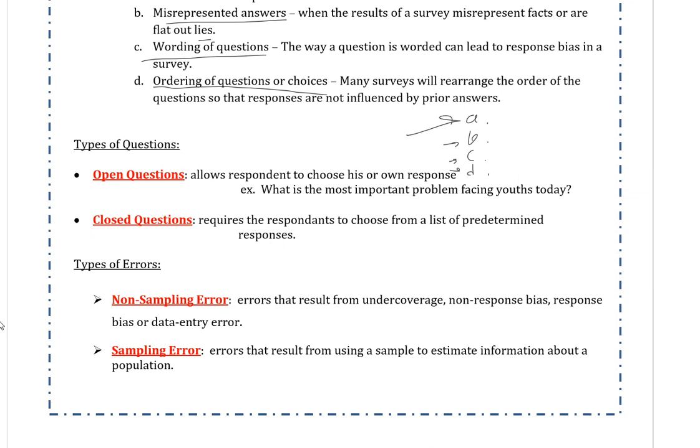Alright. Lastly, types of errors. And this is something that I say is incredibly important, particularly this last one. Non-sampling error is errors that result from under coverage, non-response bias, and response bias, or data entry error. Data entry error just means the researcher messed up typing something in, which happens very often, particularly when we make lists later on in the calculator.